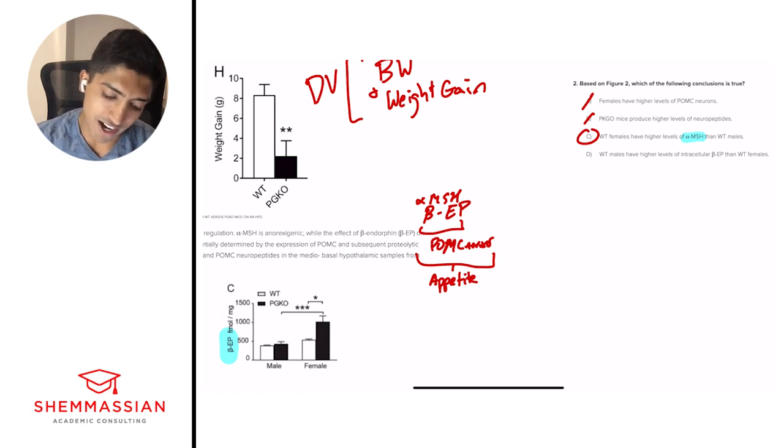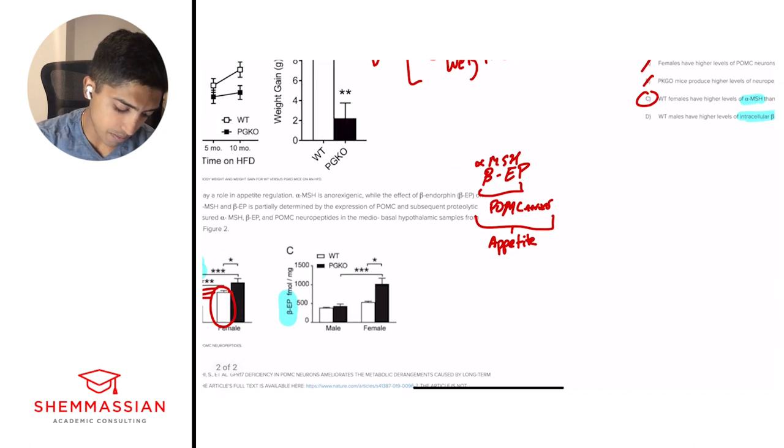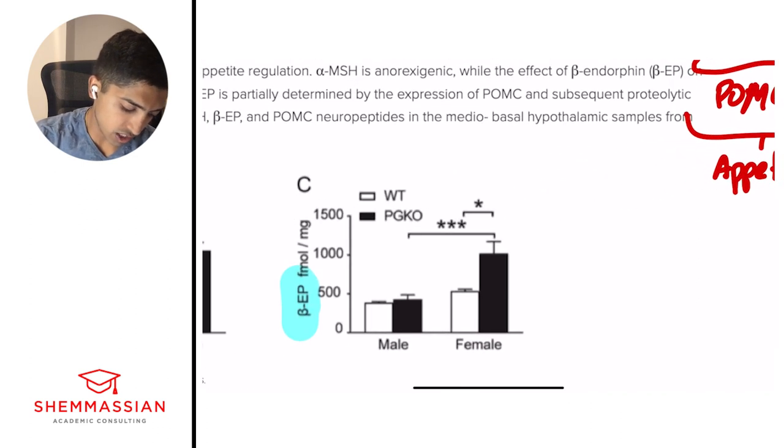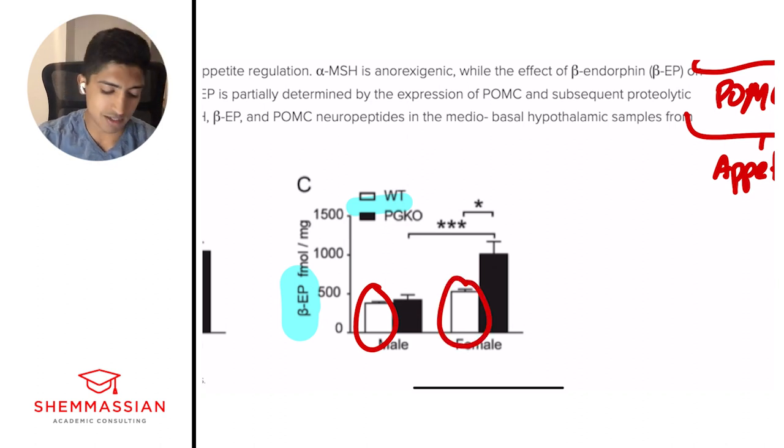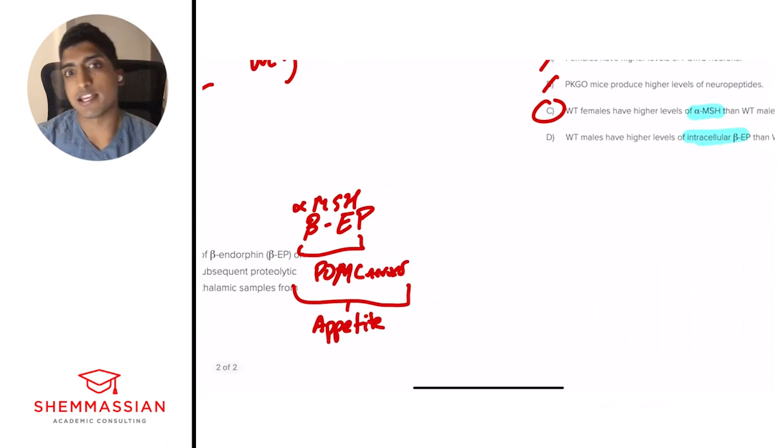Let's just look at D real quick. Wild-type males have higher levels of intracellular beta EP than wild-type females. We're looking at intracellular beta EP, and so that's the second one. And so we should look at wild-type males. We're looking again at the white graph, the white bars. And do we see a relationship between wild-type males and wild-type females? No, there is no statistical significance between the two. So we can cross that out. And with that, we have C. We're two for two. Great work.